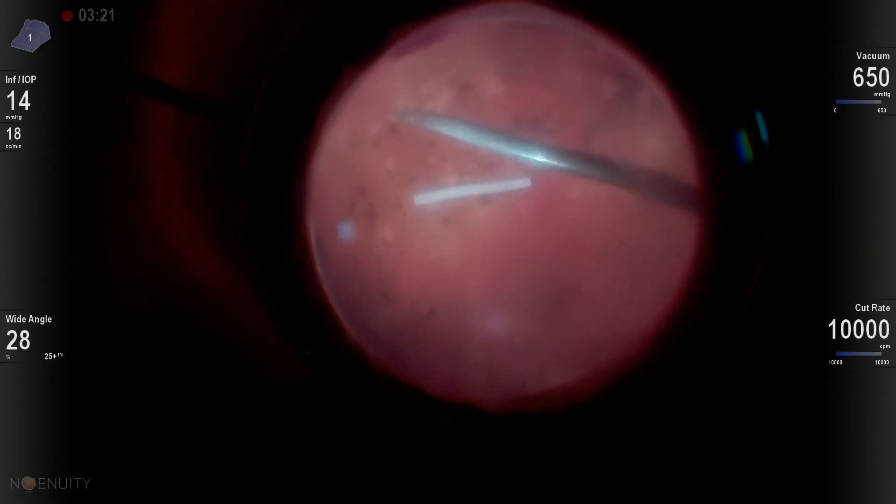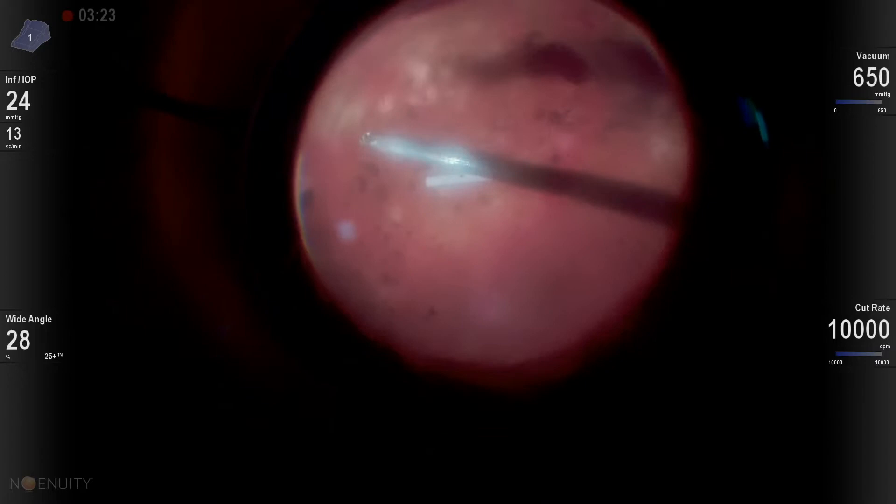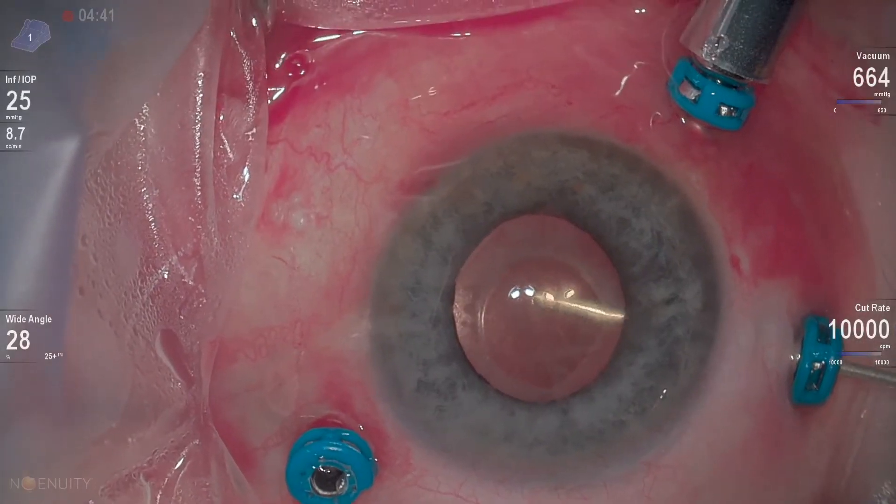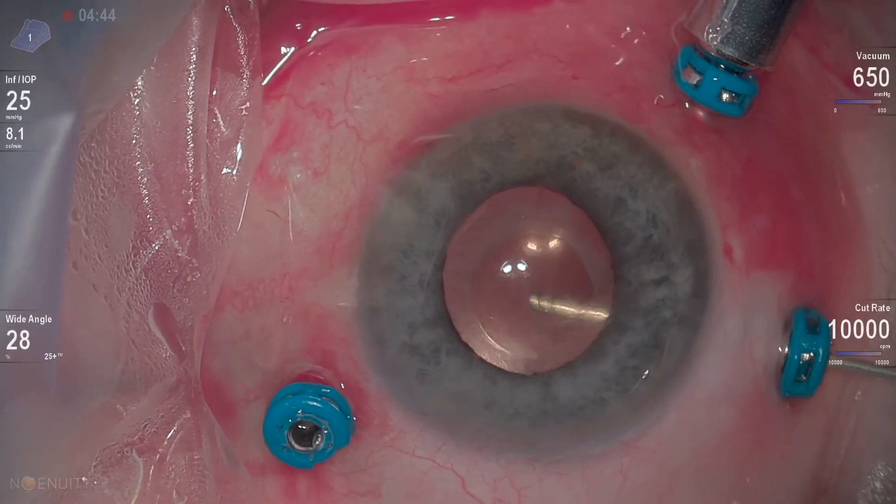Normally if there was an endophthalmitis associated with the Ozurdex injection, we would remove it. But seeing as how it's not really causing any problems at this point, we just go ahead and leave the Ozurdex in the eye to help us with postoperative macular edema.